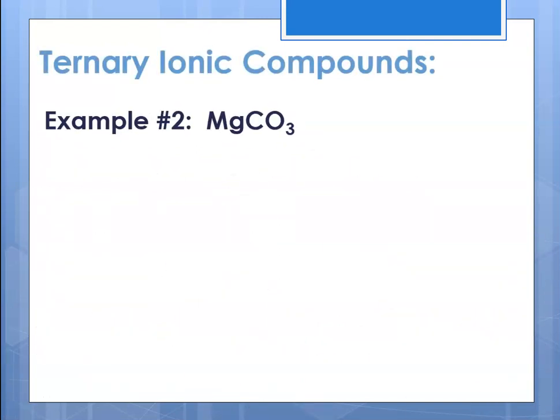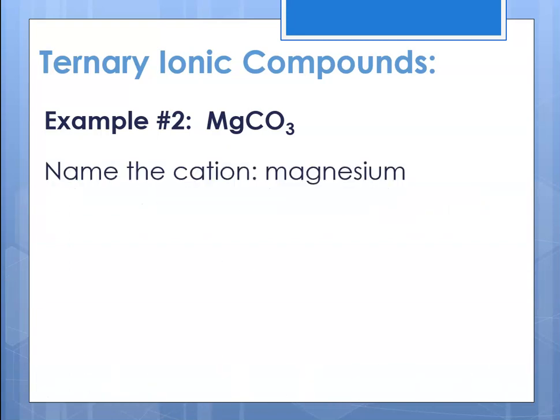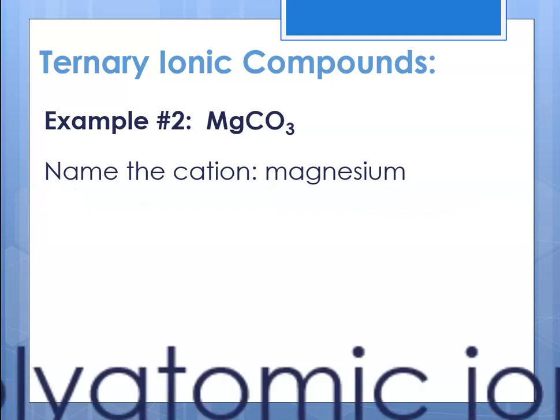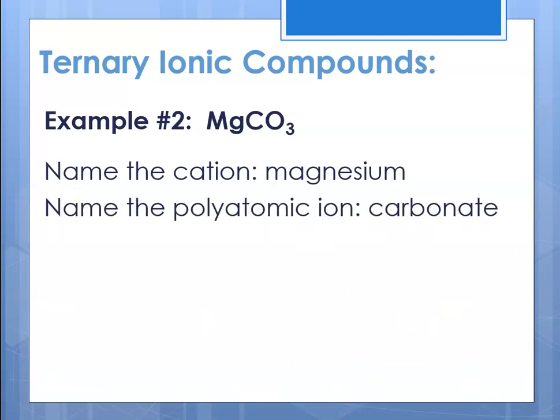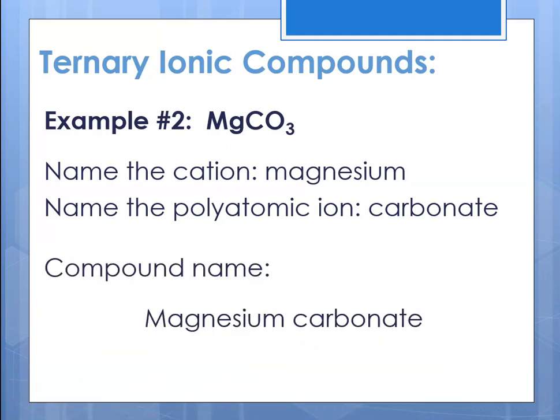Example two is MgCO₃. We name the cation — Mg is magnesium. We name the polyatomic ion — CO₃ is carbonate. The compound name would be magnesium carbonate.